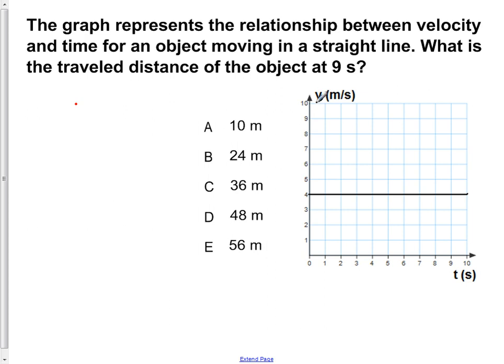As they've stated in the problem, we are given the velocity versus time graph here, and we notice that our graph is a horizontal line that goes through a value of 4 meters per second, telling us that we have a constant velocity of 4 meters per second.